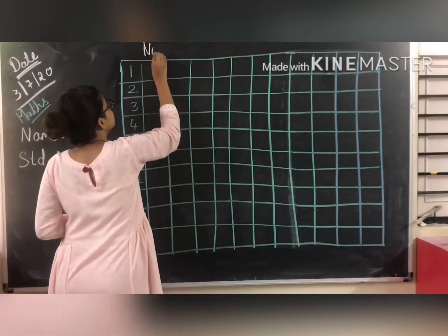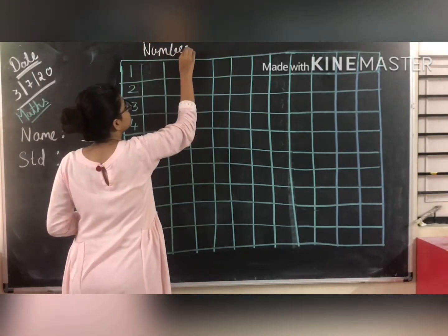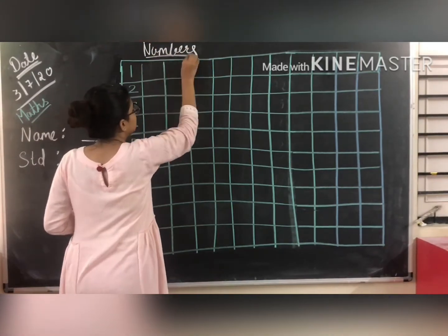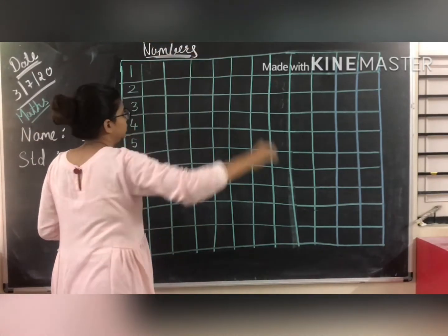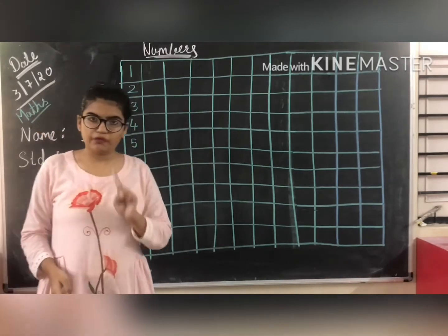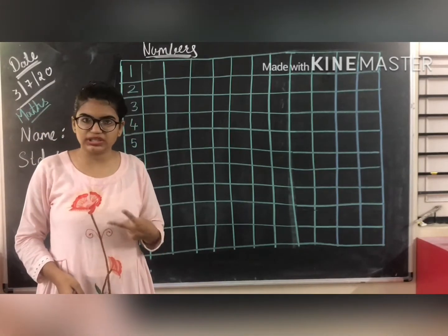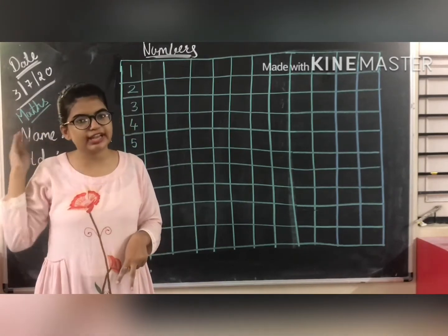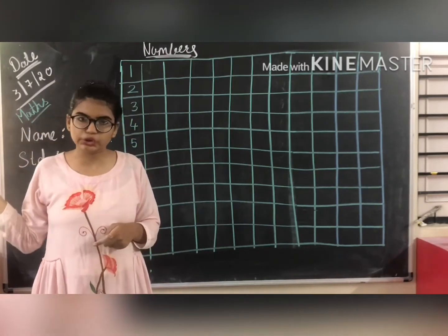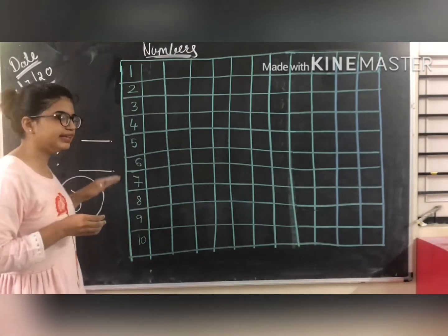So we will write numbers. What we are going to do today? Numbers. We will do 1-digit numbers and 2-digit numbers. After that, we will move to 3 digits. So first of all, let's start.